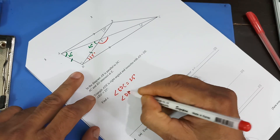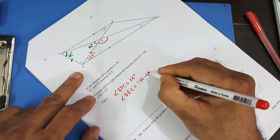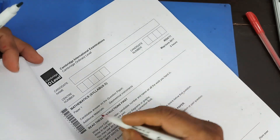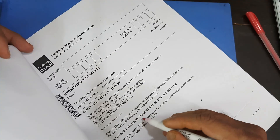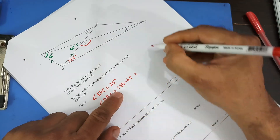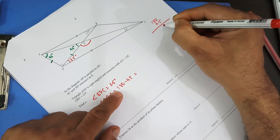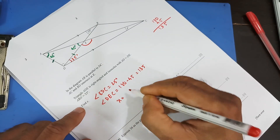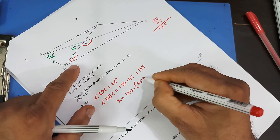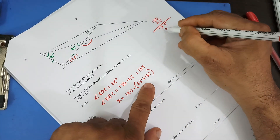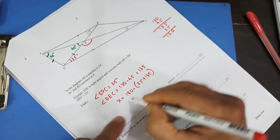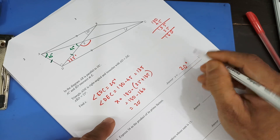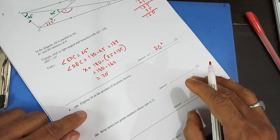Note that paper 1 is the non-calculator version, so electronic calculators must not be used. Continuing: X equals 180 minus (25 + 135). That gives 25 + 135 = 160, and 180 minus 160 = 20. So X is 20 degrees.